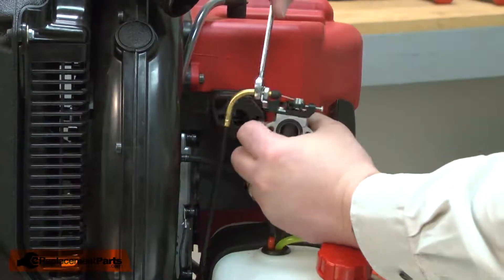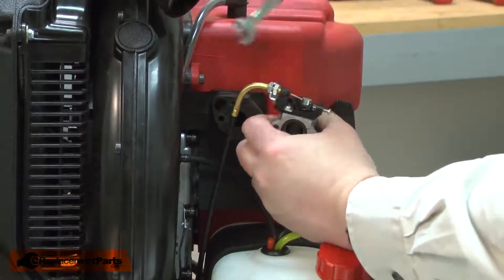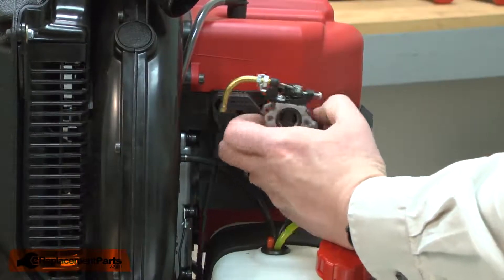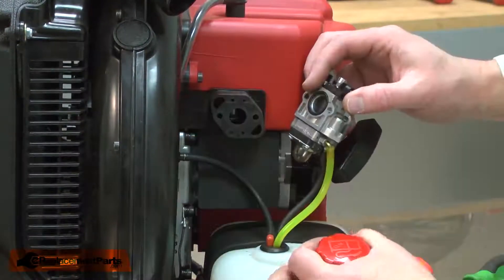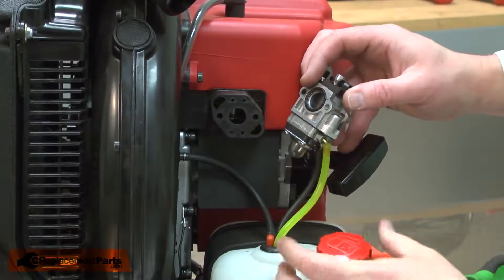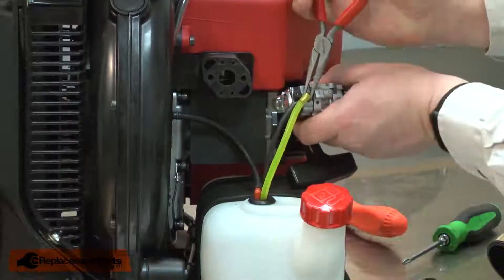I'll loosen the nut that secures the throttle cable to the carburetor. Now I can remove the cable. I'll crack open the fuel tank to relieve any pressure and then remove the fuel lines.